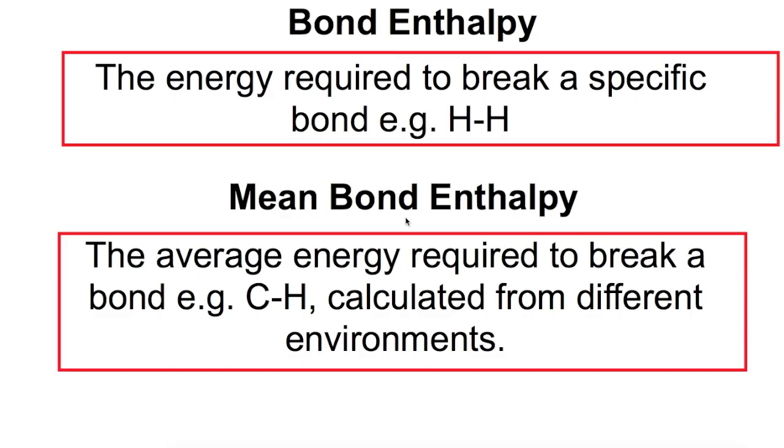The mean bond enthalpies that are shown in the other table are the average energy required to break a bond. For example a C-H bond which is calculated from different environments. So for example you would have a C-H bond in an alkane, you would have a slightly different C-H bond in an alkene or in a benzene ring. So the values required to break that bond are slightly different so they are taken as an average.